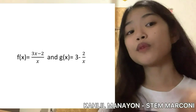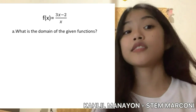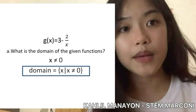Problem number one: we are given two functions and first we need to find the domain. To obtain the domain we need to determine the values of the independent variable x. We equate our denominator to zero. For the first function, the domain is x such that x is an element of all real numbers except zero. For the second function, the domain is also all real numbers except zero.